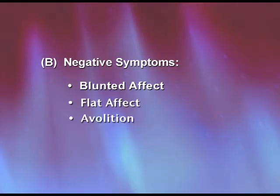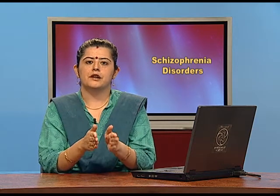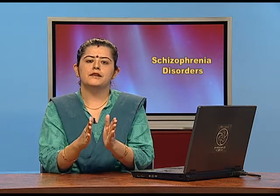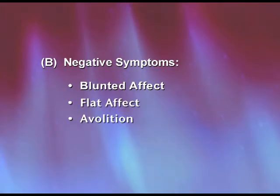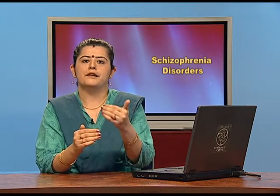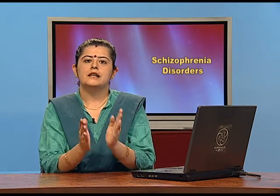Then we have avolition, which refers to goal-seeking, purposeful behavior. These people do not start a particular behavior and complete it — they either start it or leave it in the middle, unable to concentrate on a particular goal. Then there is alogia, referring to emotional receptiveness and emotional response, covered in terms of blunted and flat affect. Along with this, there is major social withdrawal — these people are not socially responsive, living in their own world of dreams and fantasy, inaccessible to others.